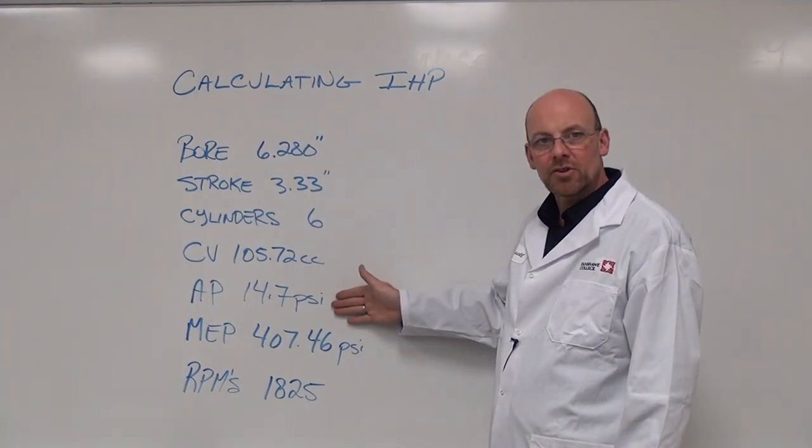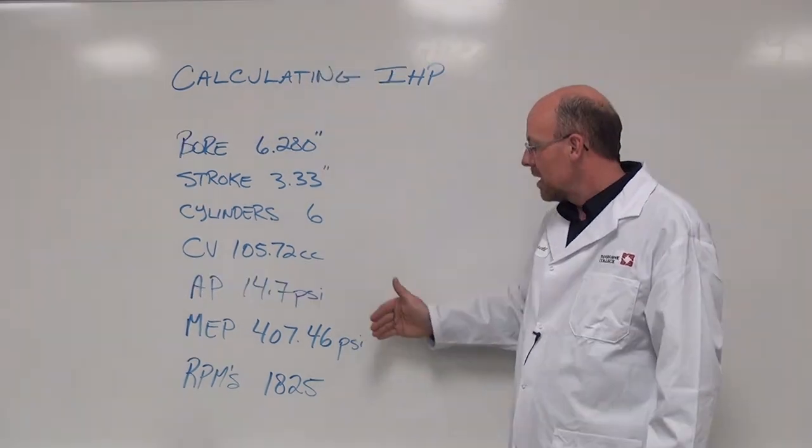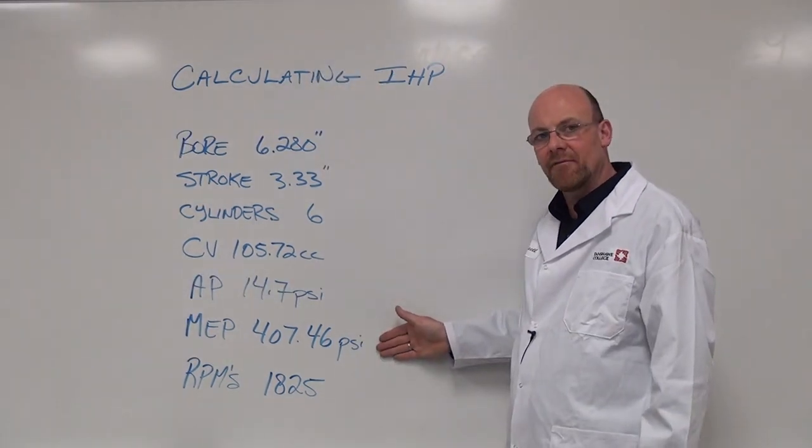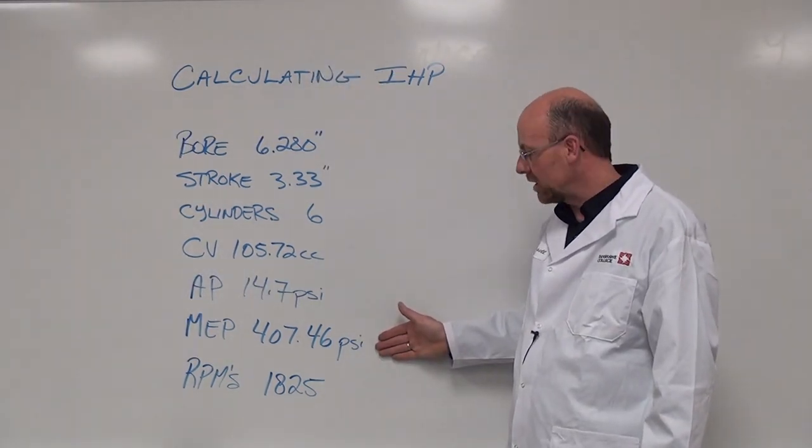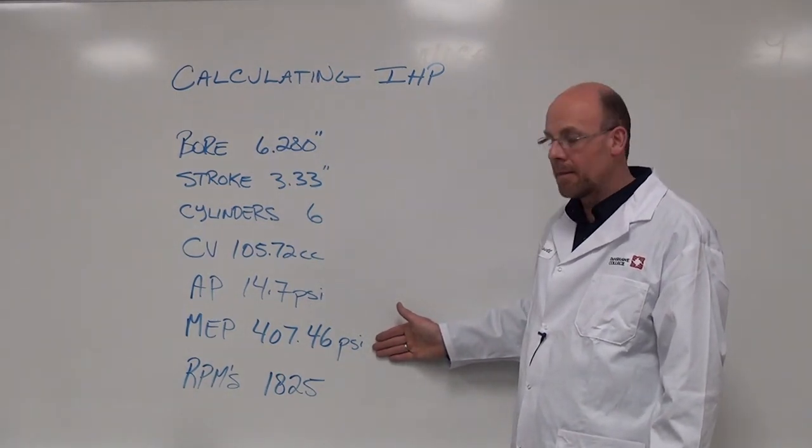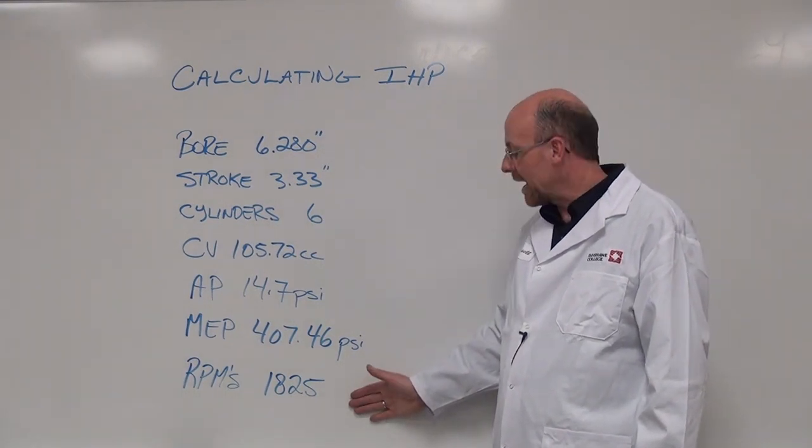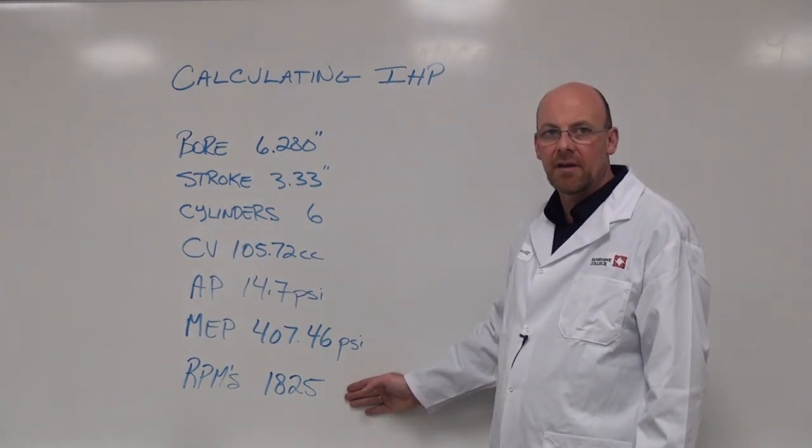The atmospheric pressure is the nominal, which is 14.7 psi. The mean effective pressure that I've given for this formula calculation is 407.46 psi. The RPMs in application that this engine is going to run at is 1825 RPMs.